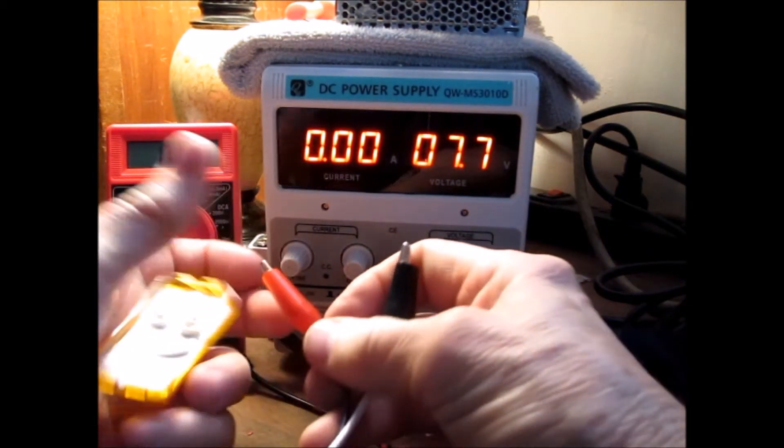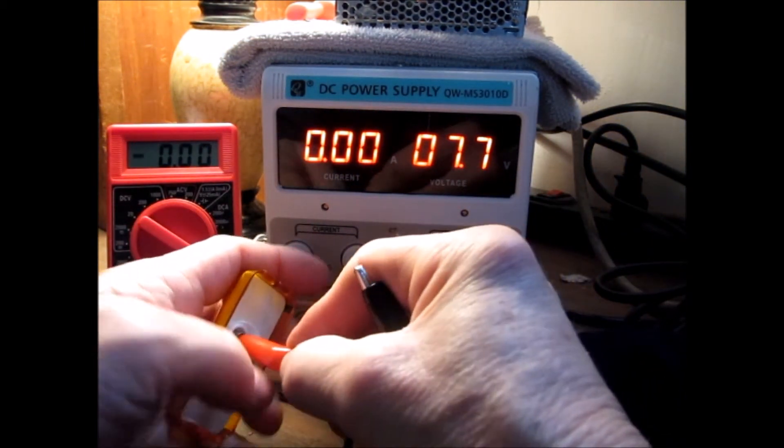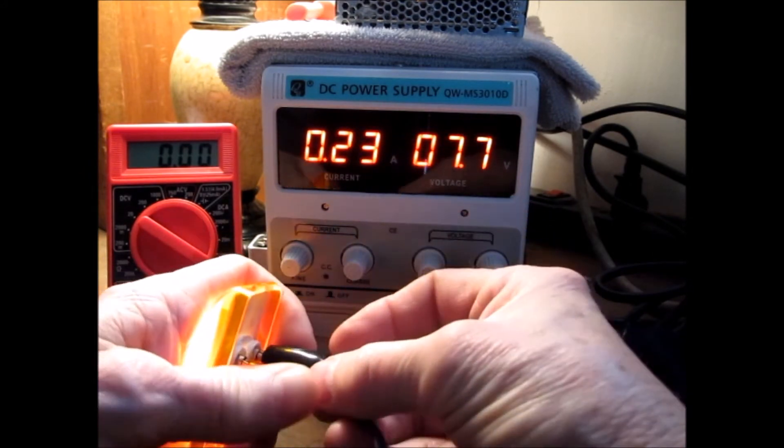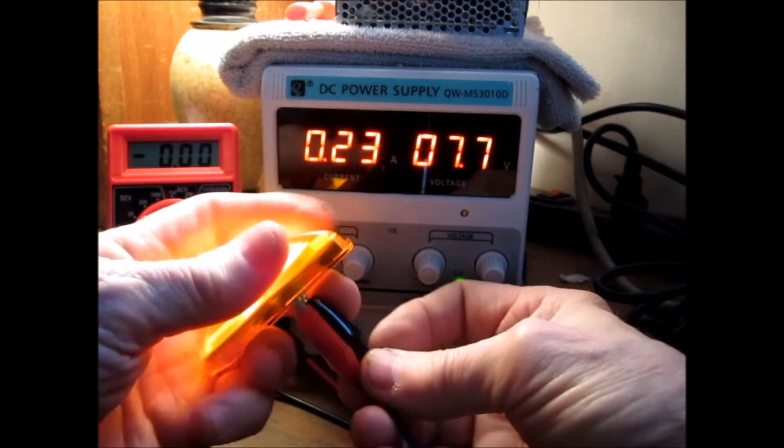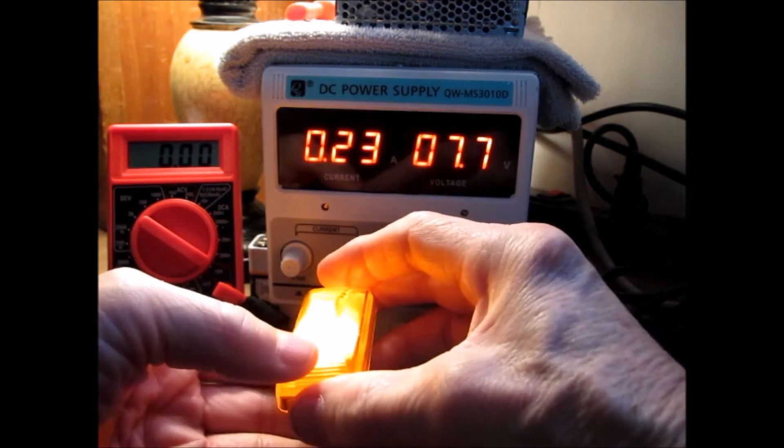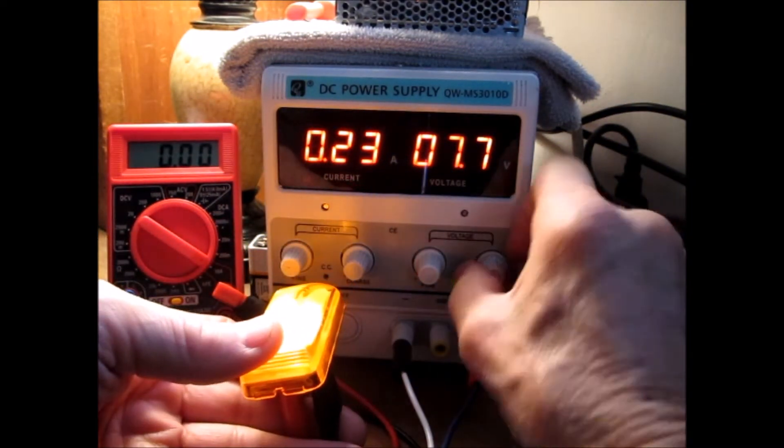I never had any problems with constant current. Here's a little 12-volt light, like a lot of the interior lights my Corvette has.